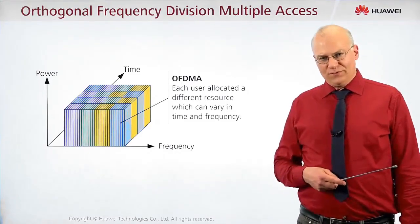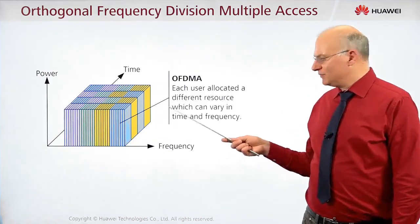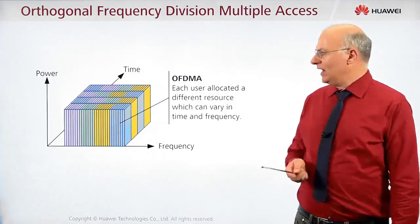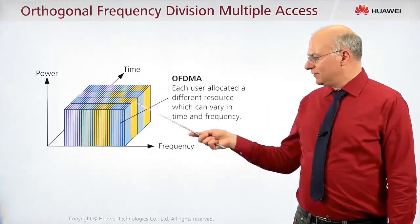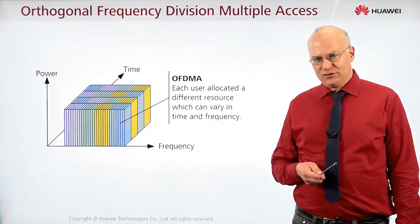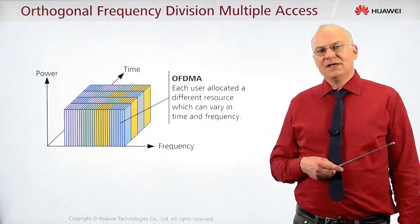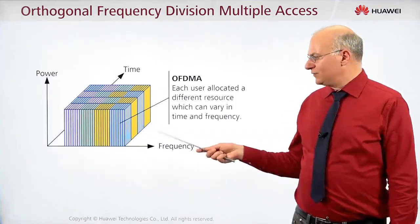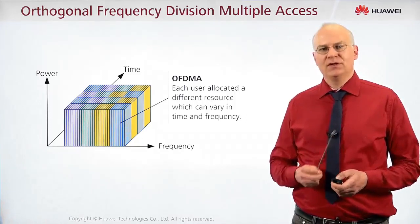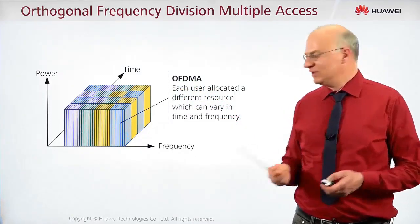Finally, we have OFDMA — Orthogonal Frequency Division Multiple Access — which uses the same dimensions as GSM: frequency and time. The difference lies in the orthogonality, meaning the sub-carriers used by different users are precisely orthogonal to each other and do not interfere with each other. In contrast to GSM, where a frequency gap is required between different users to avoid interference, OFDMA's orthogonality guarantees no interference between neighboring frequencies.